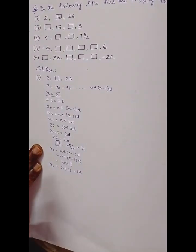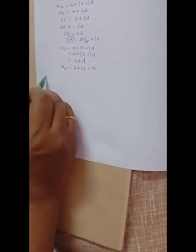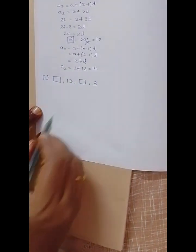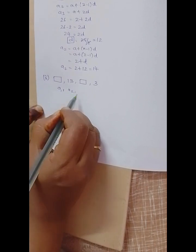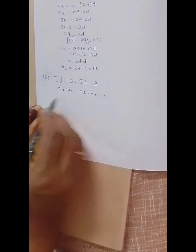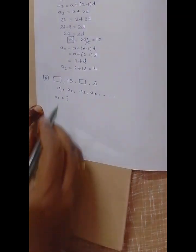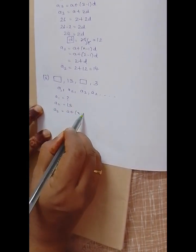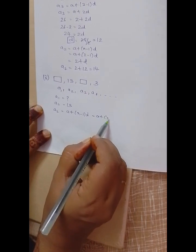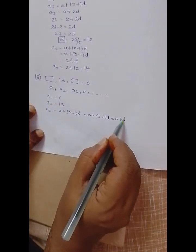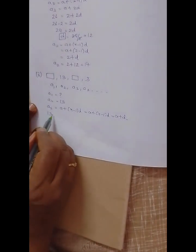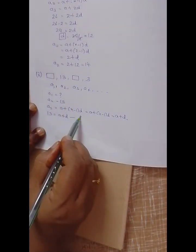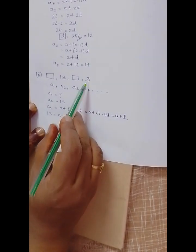Now the second problem: _, 13, _, 3. We need to fill in these boxes. This gives us a1, a2, a3, a4. We don't know a1. a2 is given as 13. a2 = a + (2-1)d = a + d, so 13 = a + d. This is equation 1.